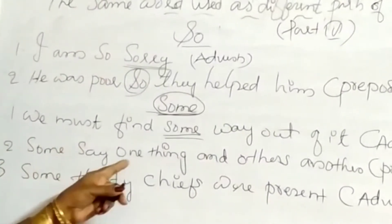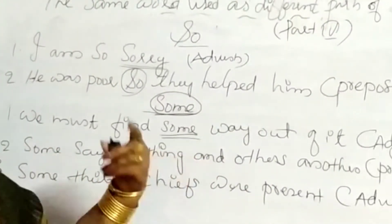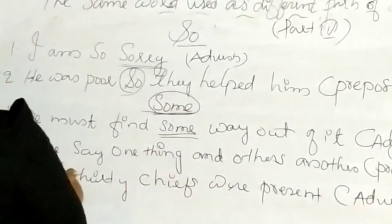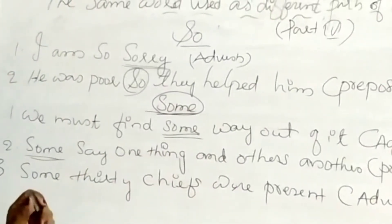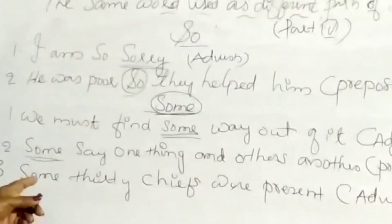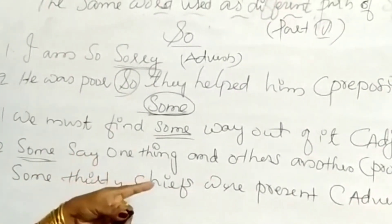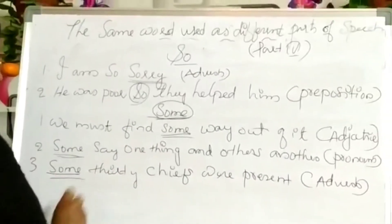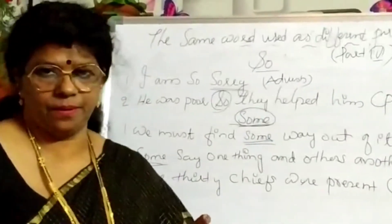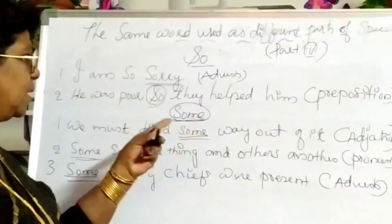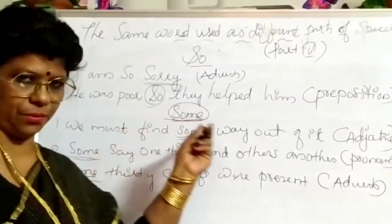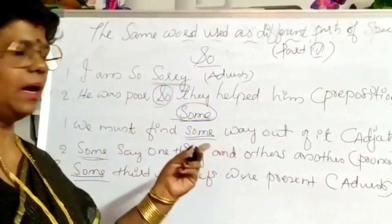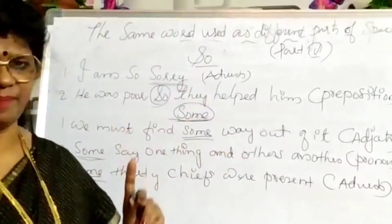In 'Some say one thing and others another,' the word 'some' shows a pronoun. In 'Some 30 chives were present,' 'some' shows an adverb. So here in various places you can see how parts of speech are used.